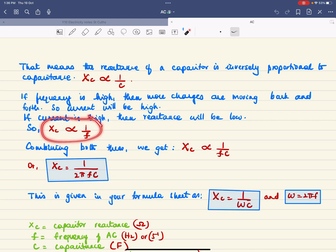If you combine both these, you get Xc is inversely proportional to Fc, and the constant of proportionality is 2π, so you end up with Xc is 1 over 2πFc.